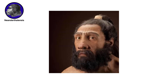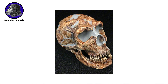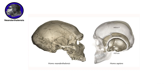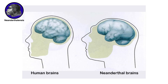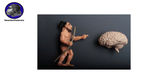Homo neanderthalensis — Neanderthals are our closest extinct human relative. Some defining features of their skulls include the large middle part of the face, angled cheekbones, and a huge nose for humidifying and warming cold, dry air. Their bodies were shorter and stockier than ours, another adaptation to living in cold environments. But their brains were just as large as ours and often larger, proportional to their brawnier bodies.